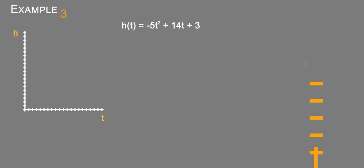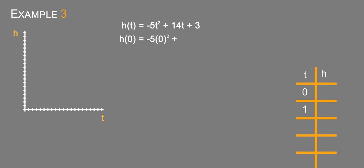So we've got a chart here of h(0), h(1), and so forth. h(0) = -5(0)² + 14(0) + 3, which equals 3. h(1) = -5(1)² + 14(1) + 3, that's going to equal -5 + 17, which equals 12.